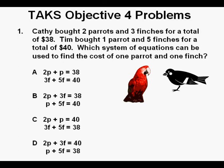TAKS Objective 4 Problems. Problem 1: Cathy bought 2 parrots and 3 finches for a total of $38. Tim bought 1 parrot and 5 finches for a total of $40. Which system of equations can be used to find the cost of one parrot and one finch?